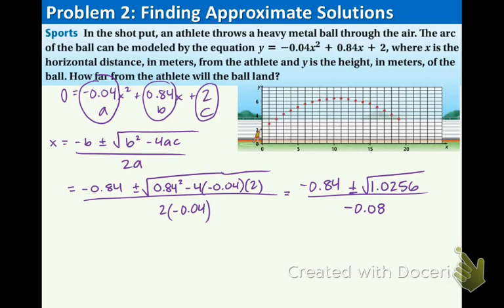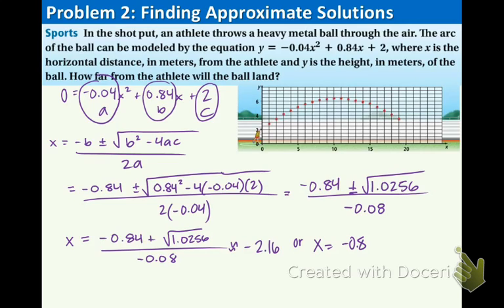We're getting pretty close. There's a plus or minus in the middle as usual, so there are two possibilities. The first possibility, adding everything, gives x approximately equal to negative 2.16. The second possibility, subtracting, gives x approximately equal to 23.16. Going back to the problem: x is the horizontal distance, so does it make sense to have a negative horizontal distance? No, it doesn't. So the only answer that makes sense is the positive one, meaning the ball will land about 23.16 meters from the athlete.